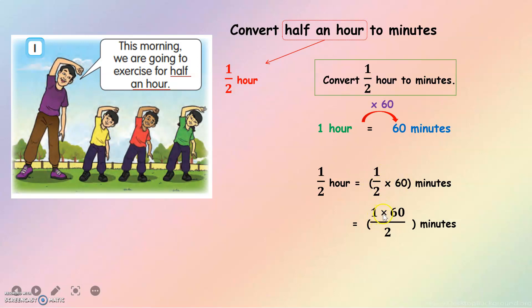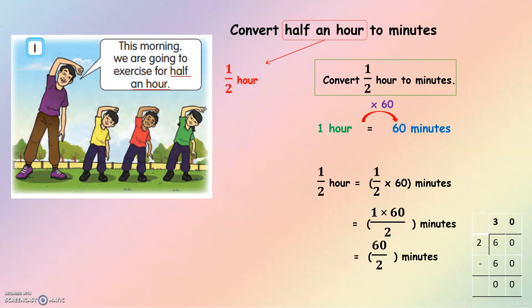1 times 60 over 2 — that is 60 divided by 2 — we get 30. The answer is 30 minutes.